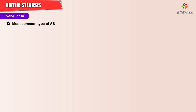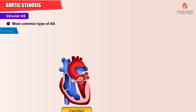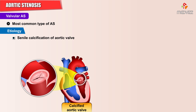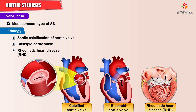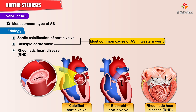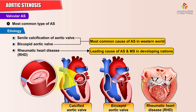The most common causes of valvular aortic stenosis in the general population are senile calcific aortic stenosis, bicuspid aortic valve, and rheumatic heart disease. Senile calcific aortic stenosis and bicuspid aortic valve remain the most common causes in the western world, while rheumatic heart disease is still a leading cause of aortic stenosis as well as mitral stenosis in the developing nations.